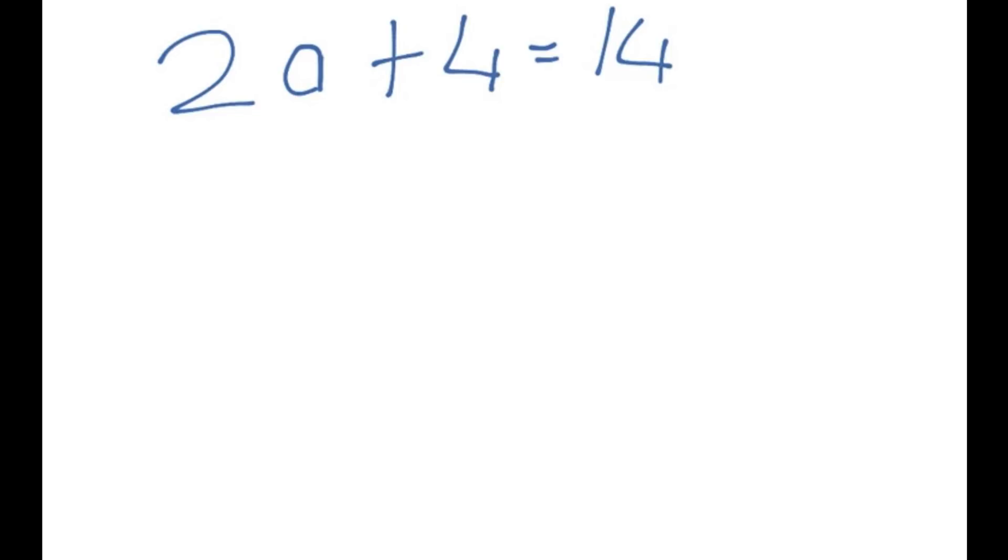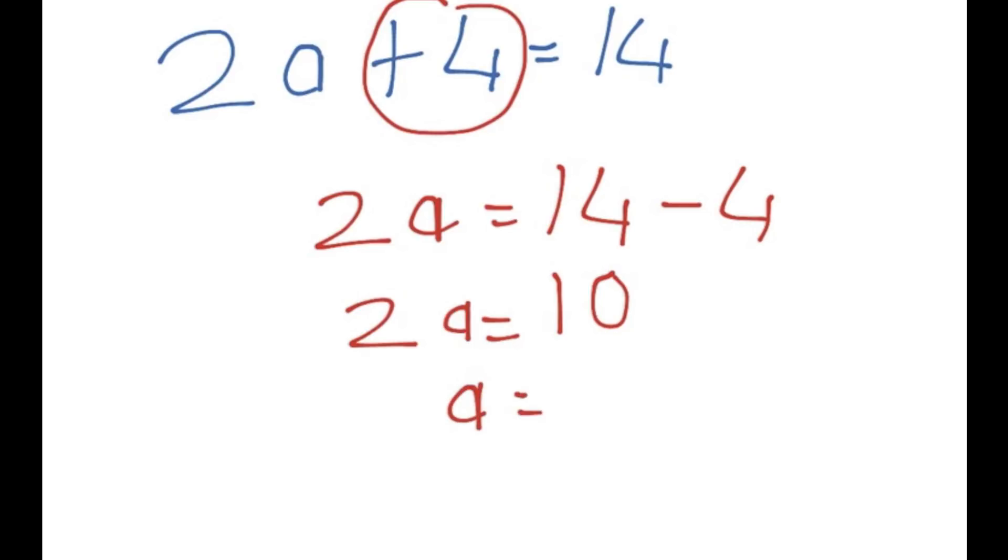Here's another one. Now this time we have a plus 4. So we would just write down 2a is equal to 14 minus 4. And the answer is 10. And we have 2a on the left. Therefore a would just be 10 divided by 2. And the answer is 5. And that's it.